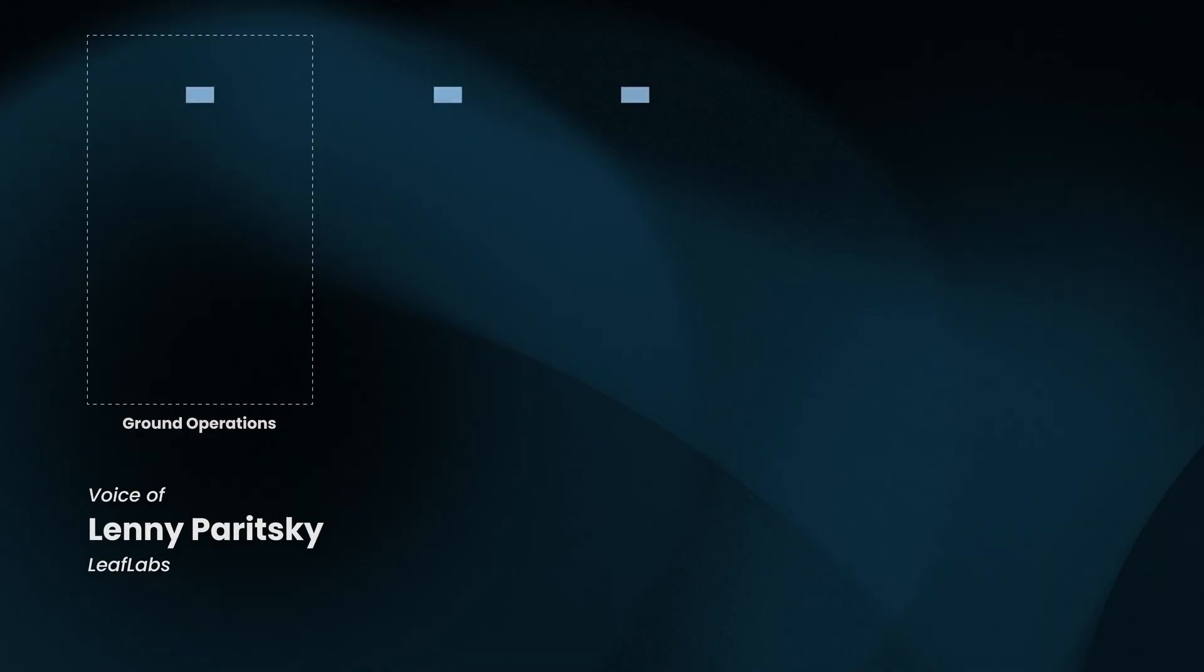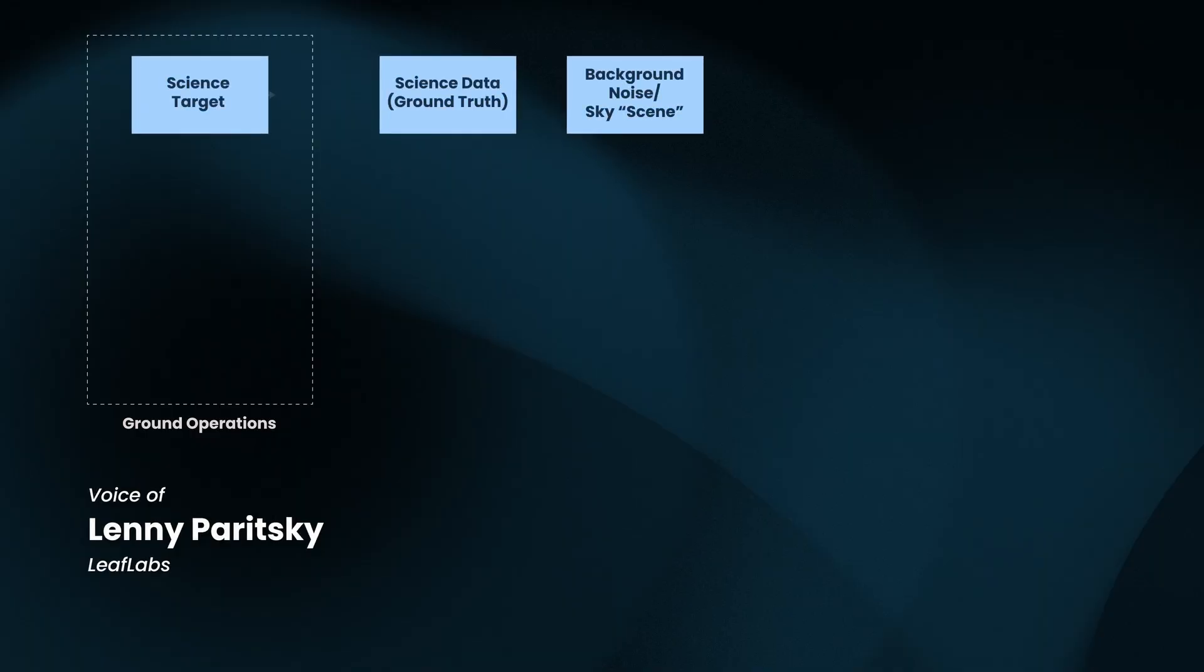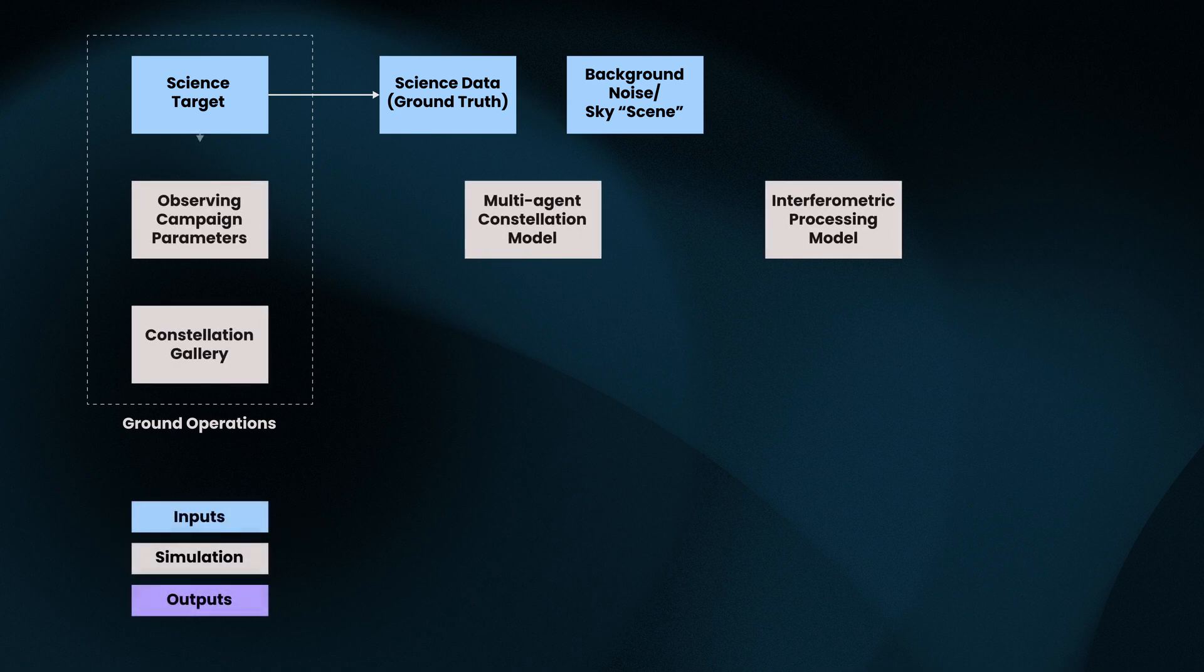In phase 1, we focused on defining the architecture for GOLO and confirming technical feasibility. In phase 2, we're now working on creating a comprehensive simulation of GOLO's operations, including the final science data products. There are two models at the heart of the simulation work we're doing in phase 2.